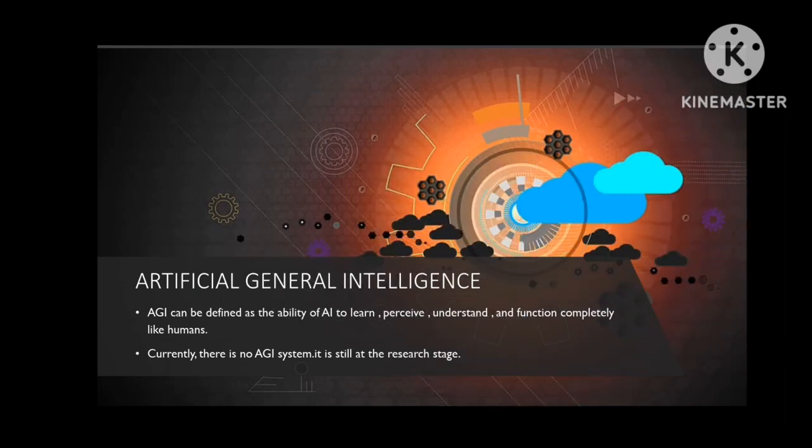The second is Artificial General Intelligence, shortly called AGI. AGI can be defined as the ability of AI to learn, process, understand, and function completely like humans. Currently there is no AGI system — it is still at the research stage.